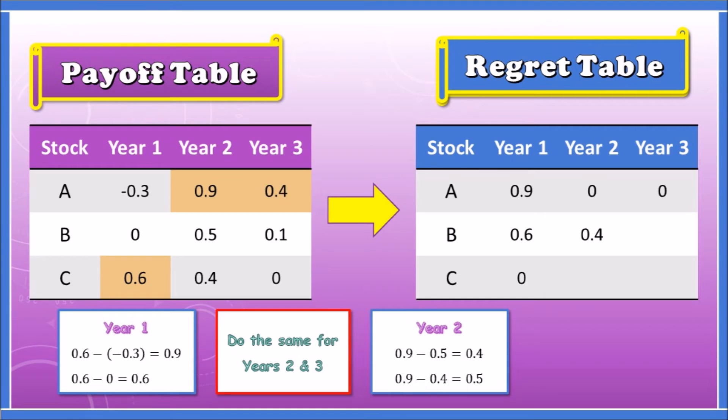Looking at Year 3, we have 0.4 minus 0.1 for stock B is 0.3, and for stock C, 0.4 minus 0 is 0.4. Here I just shaded the blue part to indicate where we found our highest payoff in the previous table.